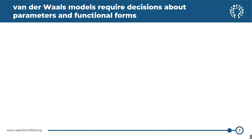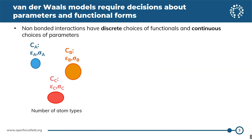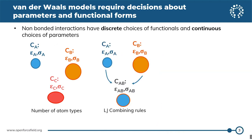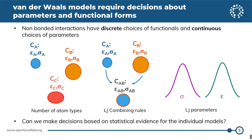In addition to this, there are a lot of decisions we need to make about parameters and functional forms — both discrete choices of models and continuous choices of parameters within those models. For example, a discrete choice is the number of atom types in a model — Mike Gilson talked about this yesterday. Another is Lennard-Jones combining rules: how do you parameterize interactions between unlike atom types? And then there are continuous choices, like epsilon and sigma in the Lennard-Jones functional. We're interested in making these decisions based on statistical evidence for individual models and sets of parameters.